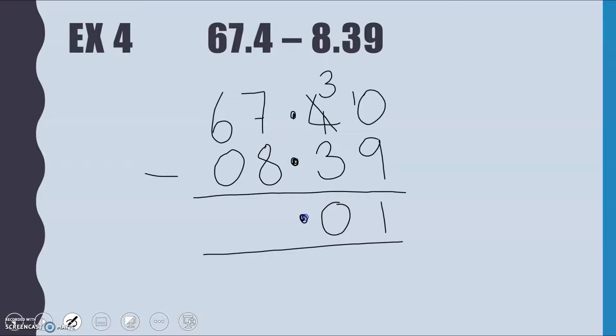My decimal point needs to line up. 7 take away 8, I can't do, so I'm going to borrow another 1 from that 6. 17 take away 8 then is 9, and 5 take away 0 is 5, so 59.01 for my answer there.